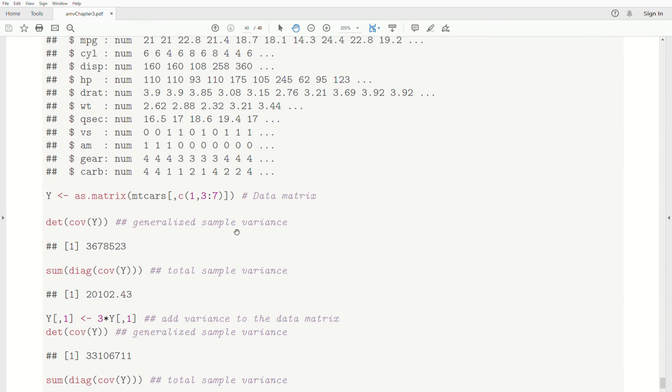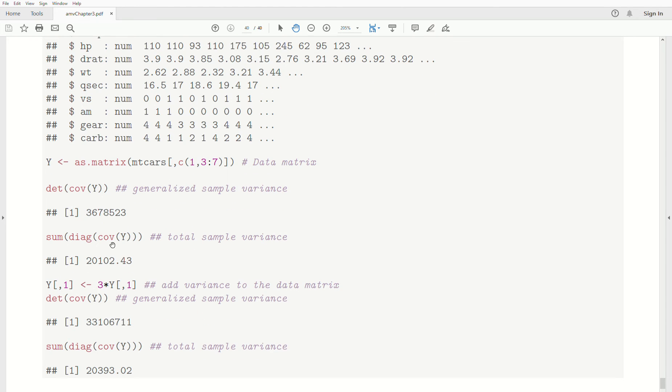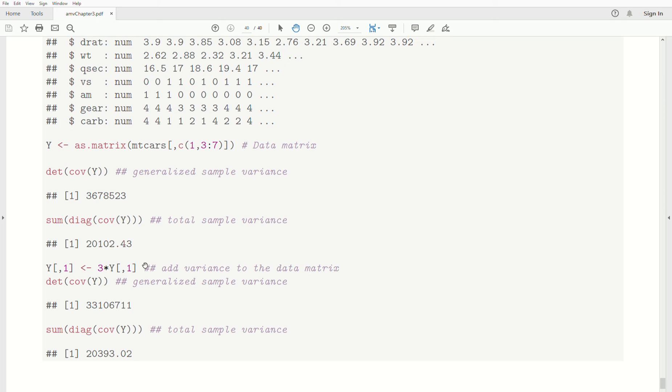We're currently only thinking about continuous variables in this class so far. So, the generalized sample variance is the determinant of the covariance of Y. And it's this number here. It's a big number. The total sample variance is the trace of the covariance matrix. And we calculate it this way. The sum of the diagonal elements of that covariance matrix. And we get a number.